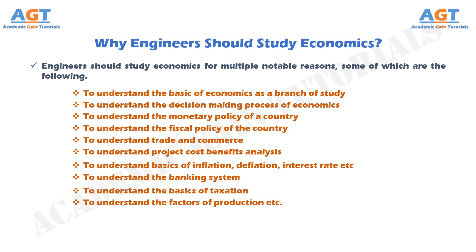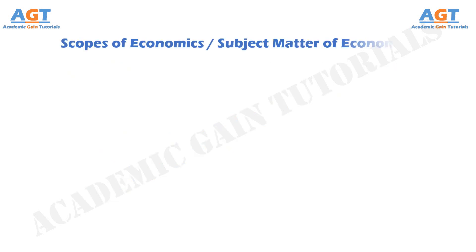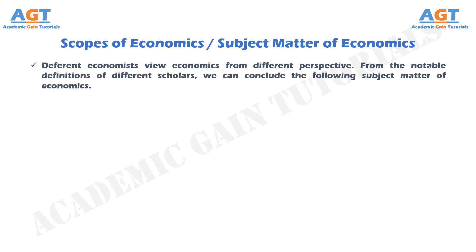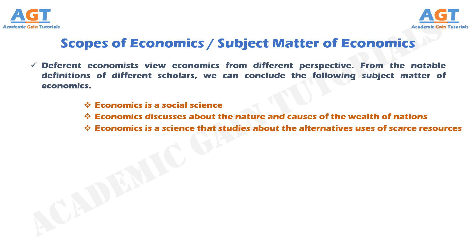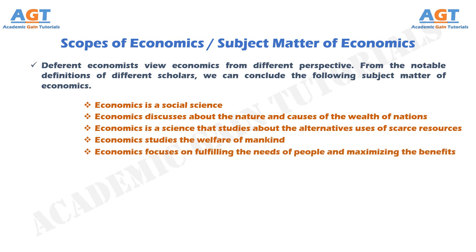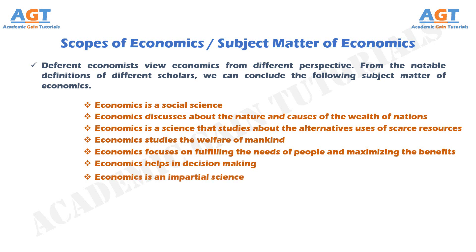Now that we have learnt about why we should study economics, let us look into the scopes of economics, or subject matter of economics. Different economists view economics from different perspectives. From the notable definitions of different scholars, we can conclude the following subject matter of economics: economics is a social science; economics discusses the nature and causes of the wealth of nations; economics is a science that studies the alternative uses of scarce resources; economics studies the welfare of mankind; economics focuses on fulfilling the needs of people and maximizing benefits; economics helps in decision making; economics is an impartial science; and economics shows ways to the solution of problems.